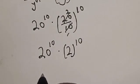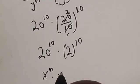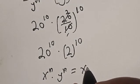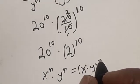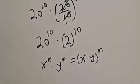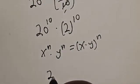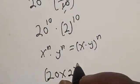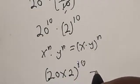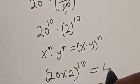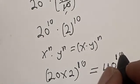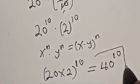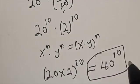Now, if you have s raised to power n multiplied by y raised to power n, this is equal to (s multiplied by y) raised to power n. So this gives us (20 multiplied by 2) raised to power 10, which equals 40 raised to power 10. And that is our final answer. If you love the class, please subscribe.